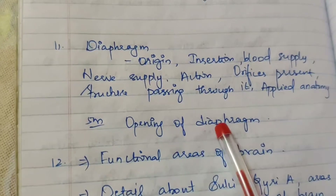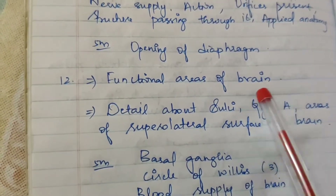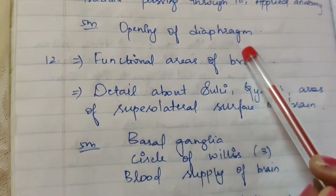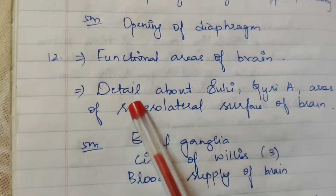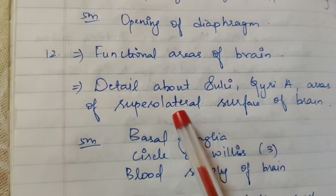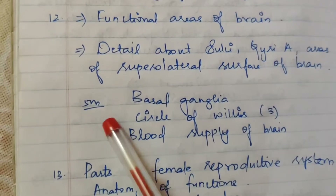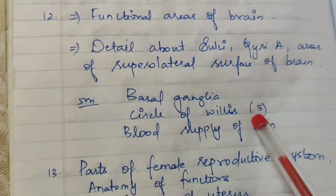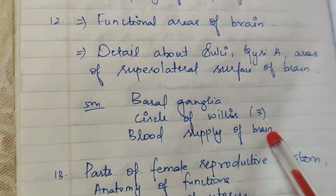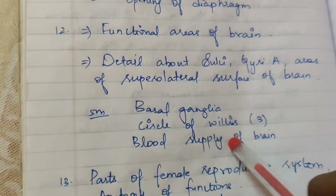Twelfth question: related to the brain. Fifteen marks asked on functional areas of the brain — details about sulci, gyri, and areas of the superior lateral surface of the brain. Five marks asked on circle of Willis — three times; basal ganglia — one time; and blood supply of brain — one time.